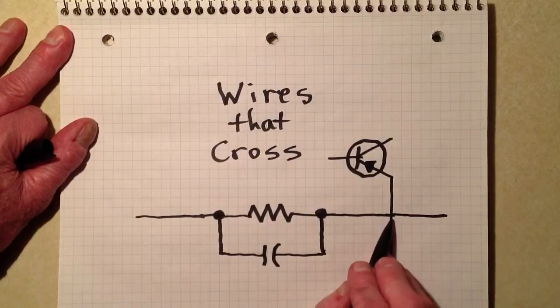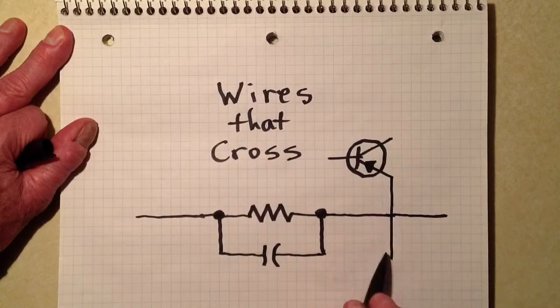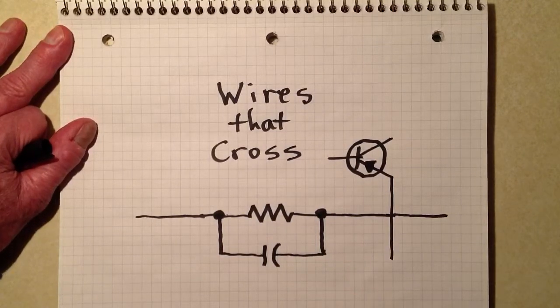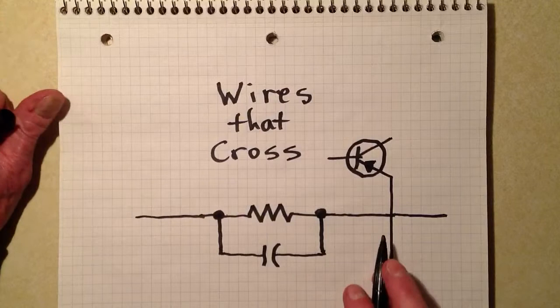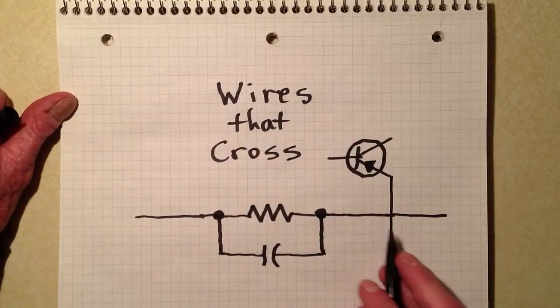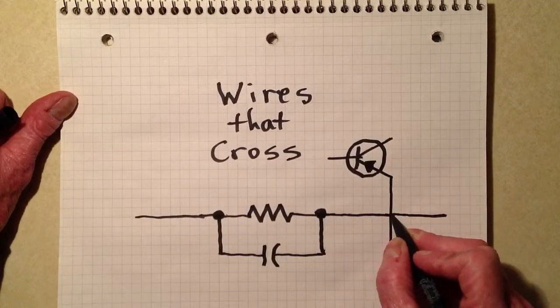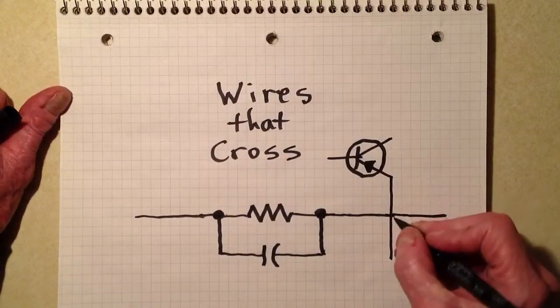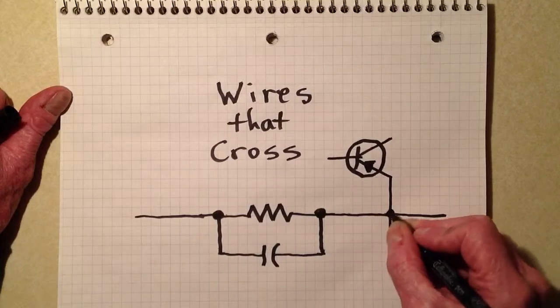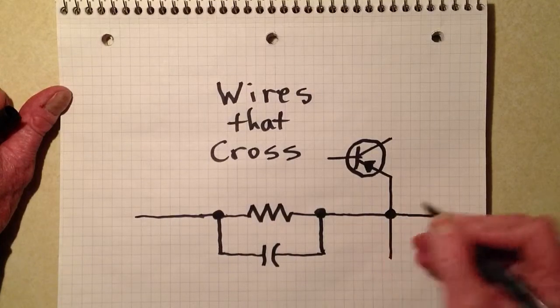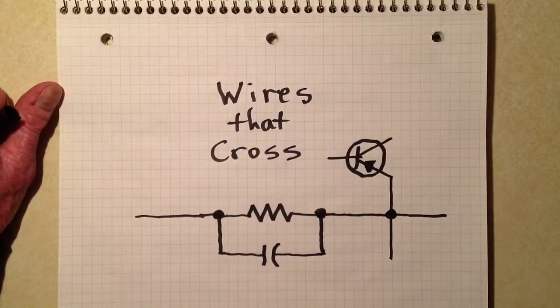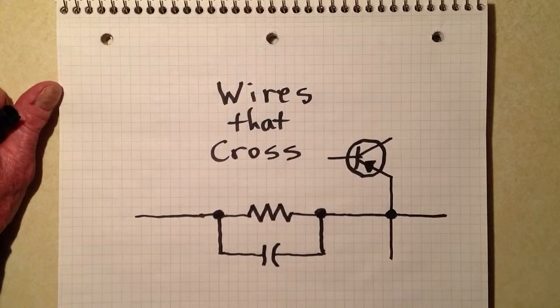Now, is this wire connected to that one or not? That's the source of some consternation and confusion. If you have something like this and you see two wires that cross over each other like that, they're meant to be connected if and only if you see a dot right there.